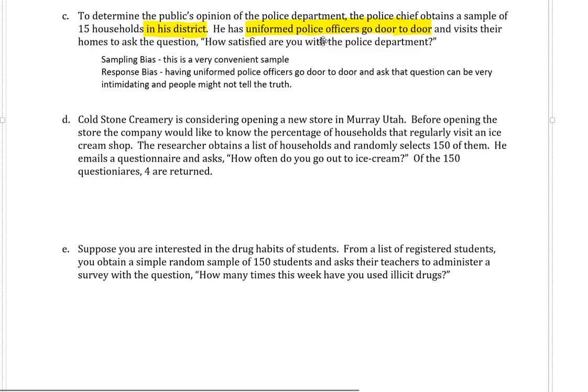A couple more. Cold Stone Creamery is considering opening a new store in Murray, Utah. Before opening the store, the company would like to know the percentage of households that regularly visit ice cream shops. The researcher obtains a list of households and randomly selects 150 of them. He emails a questionnaire and asks, How often do you go out to get ice cream? Of the 150 questionnaires, four were returned. Okay. So we don't have too much indication that there was a problem with the sample itself. The researcher obtained a list of households and randomly selected 150 of them. That sounds like a decent enough sample.